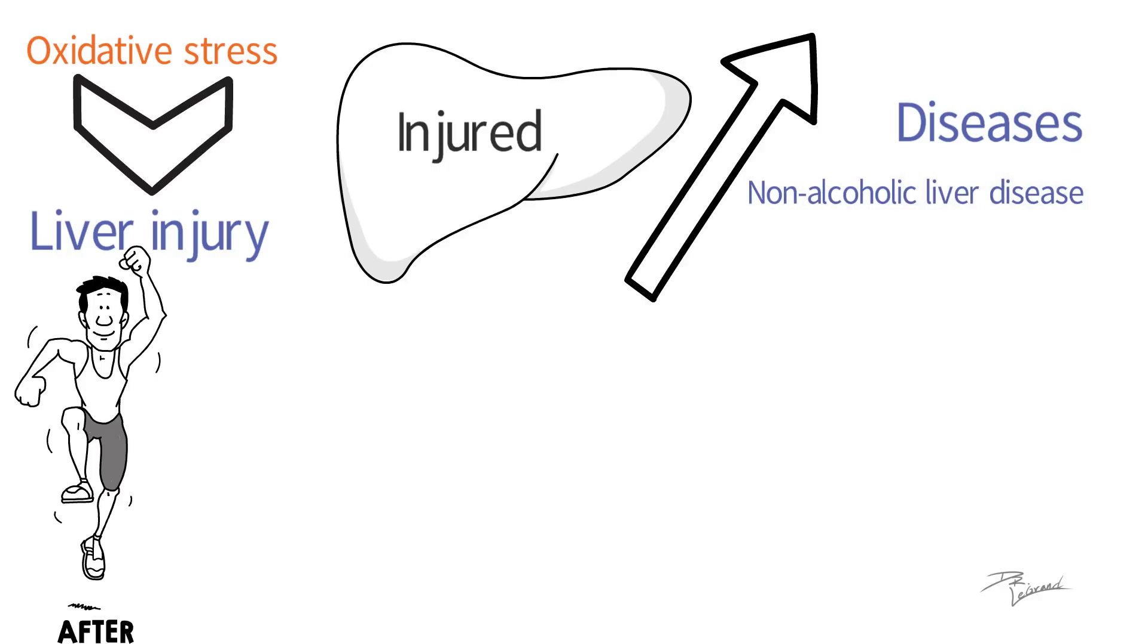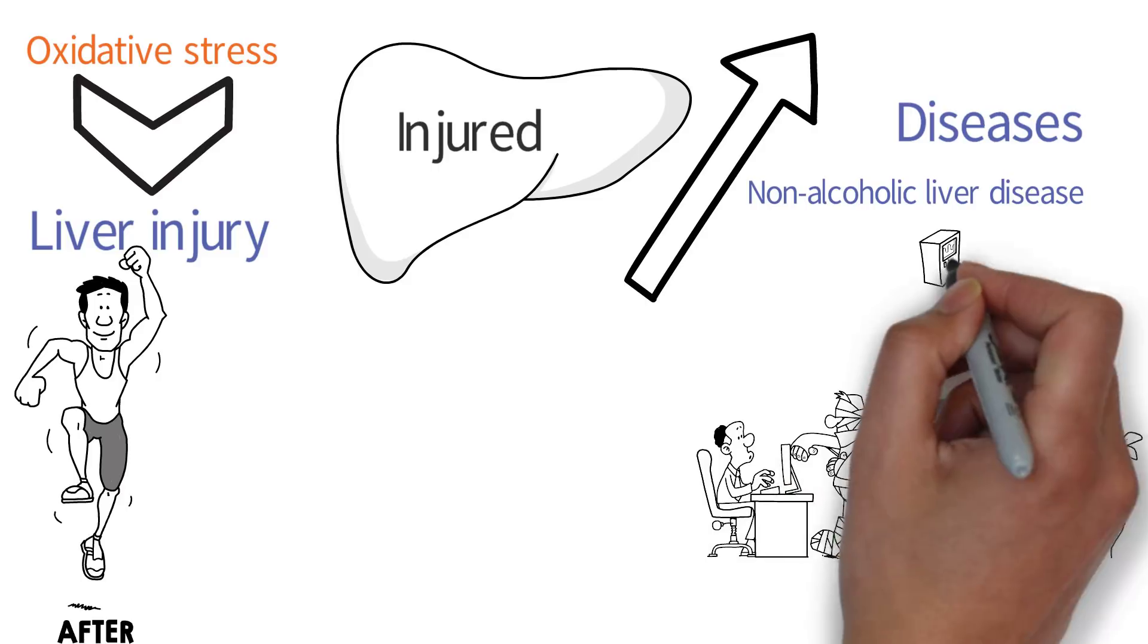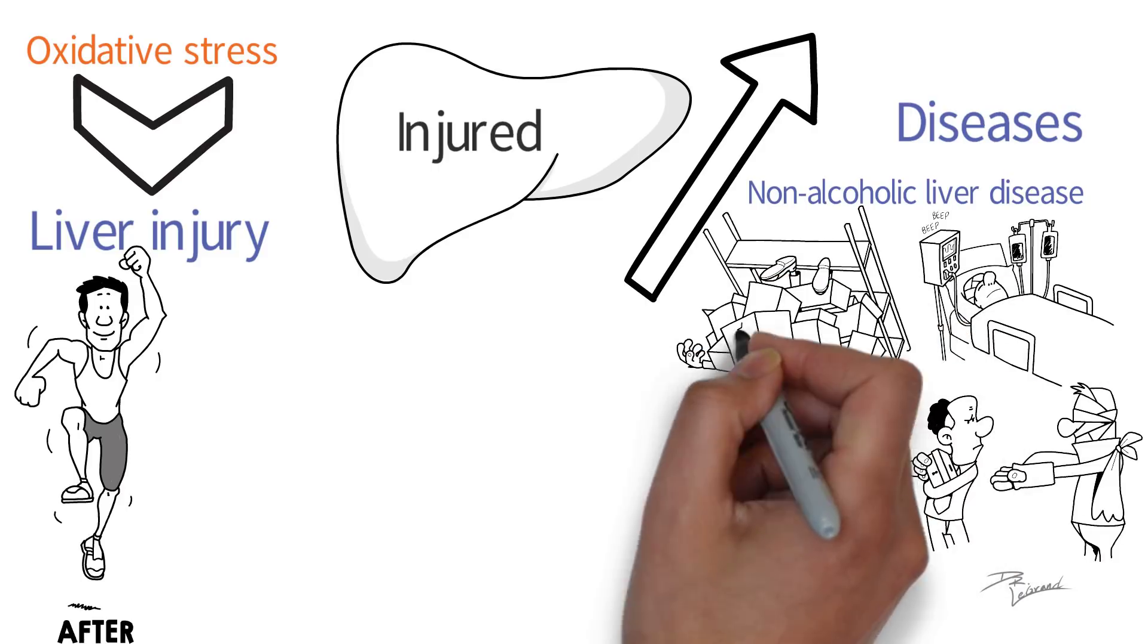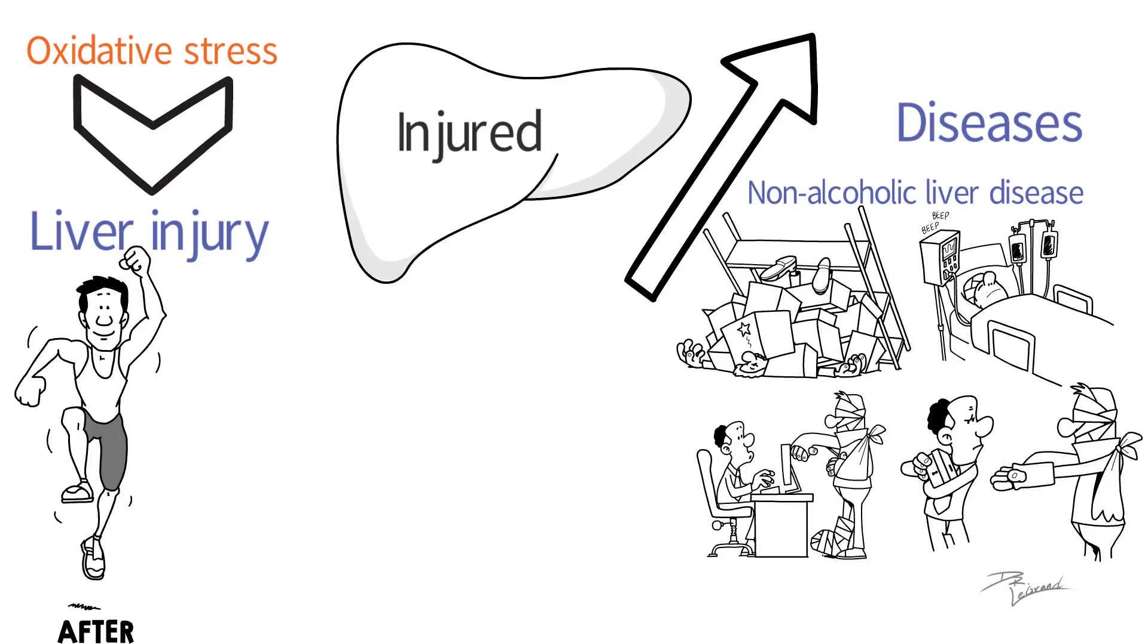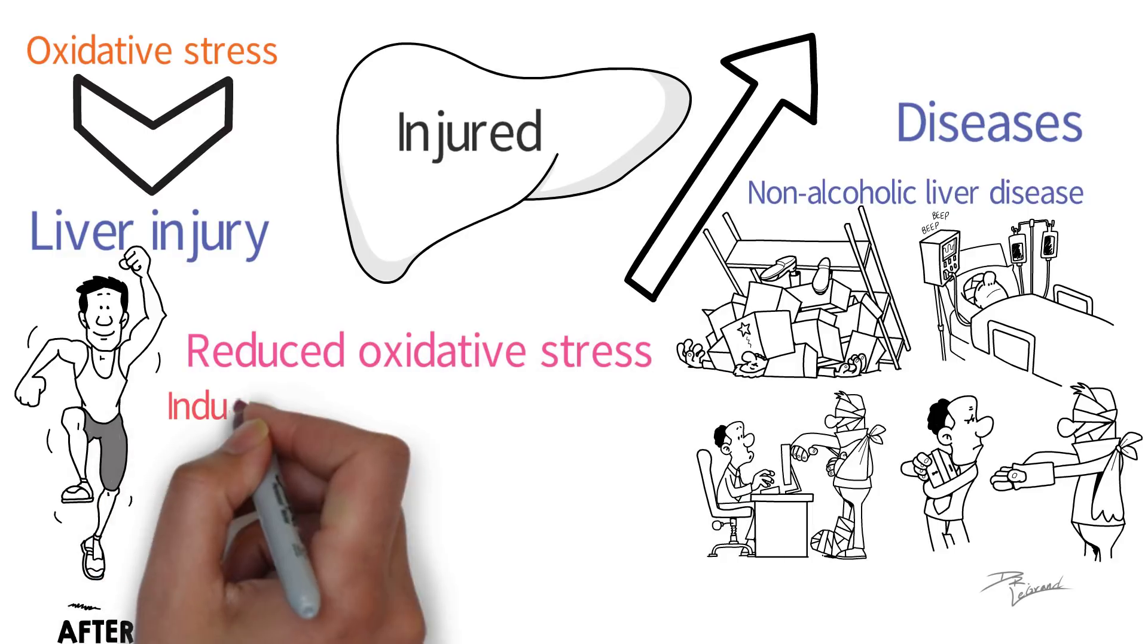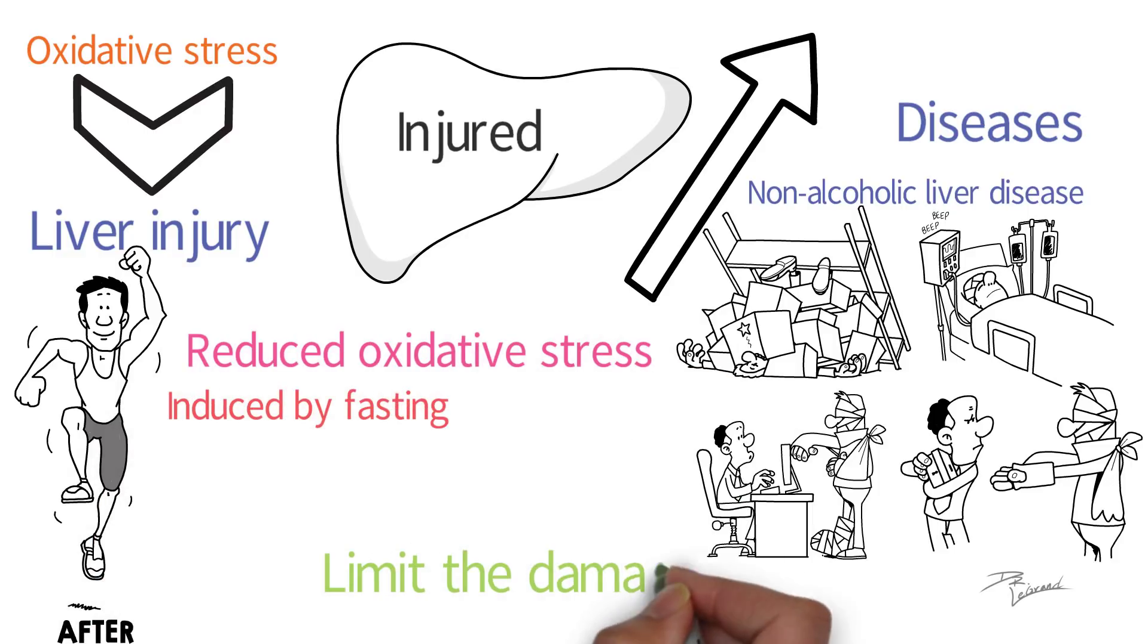Continuous progression then leads to a condition known as cirrhosis, which leads to a dysfunction of the organ. Reduced oxidative stress induced by fasting can help to limit the damage to the liver.